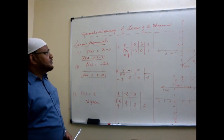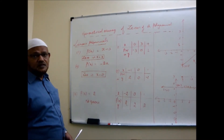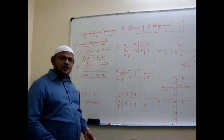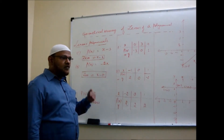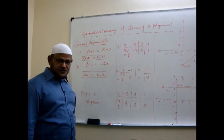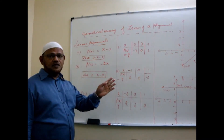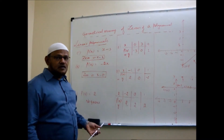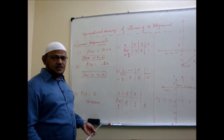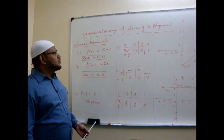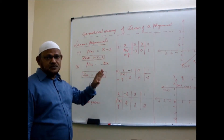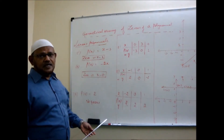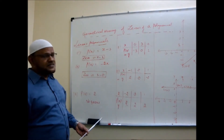Geometrical meaning of zeros of a polynomial. We have already seen that the zero of a polynomial means what value of the variable x will make the polynomial p(x) vanish. That value we call the zero of the polynomial, as seen in the previous class. Here, geometrical interpretation means graphically we can see that.